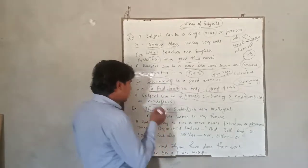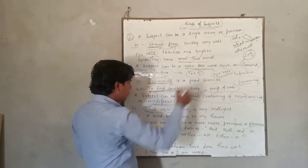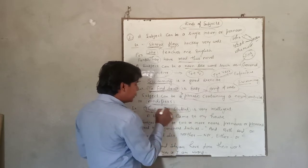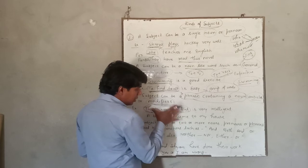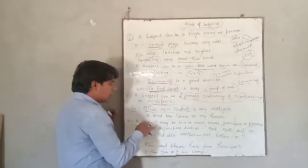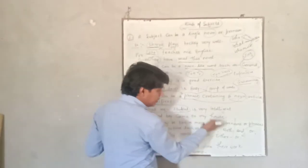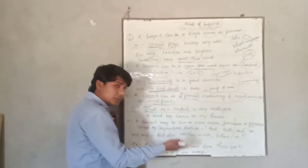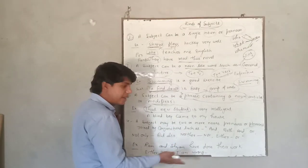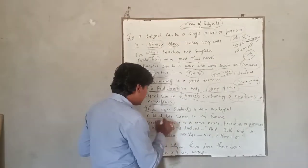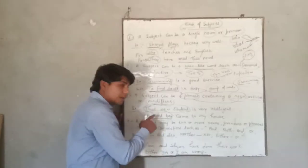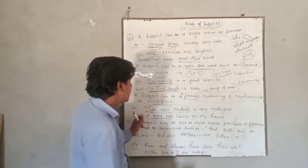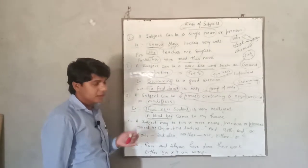So 'that new student' — these three words are used at the place of subject. Second example: 'A blind boy came to my house.' Who came to my house? We get the answer: 'a blind boy.' A blind boy is also a group of words, so this is also a phrase used as the subject.